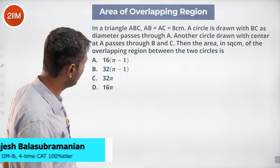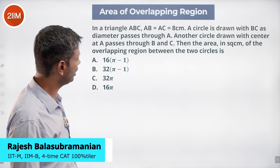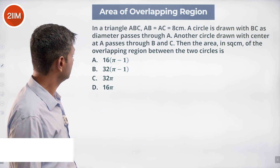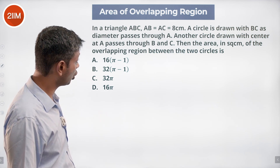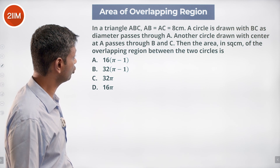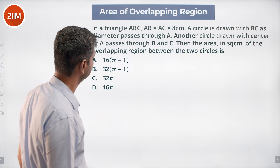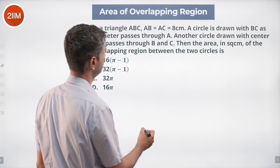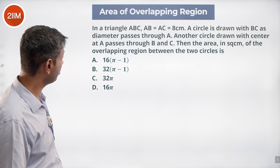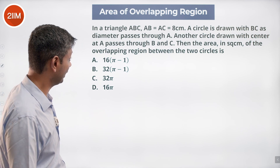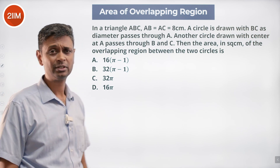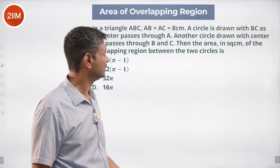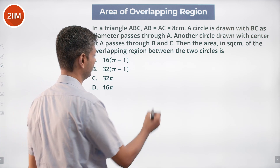In triangle ABC, AB equals AC equals 8 centimeters. A circle is drawn with BC as diameter and passes through A. Since the circle with BC as diameter passes through A, that means it's a right-angle triangle — specifically an isosceles right-angle triangle.